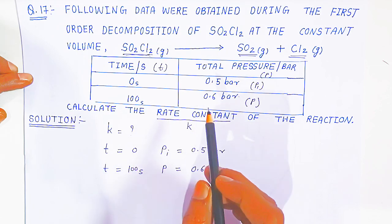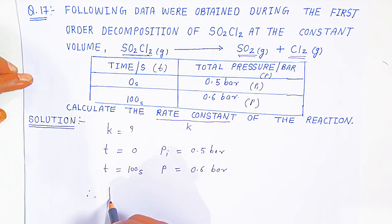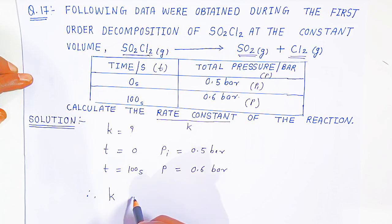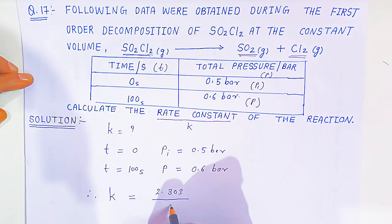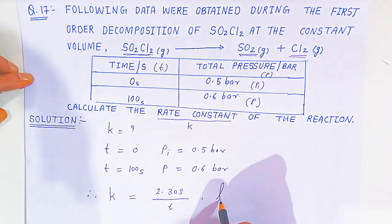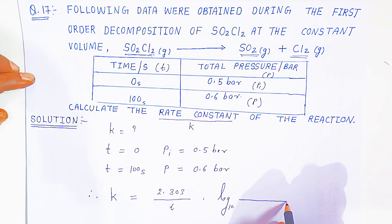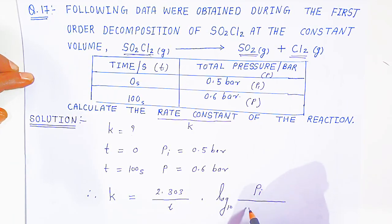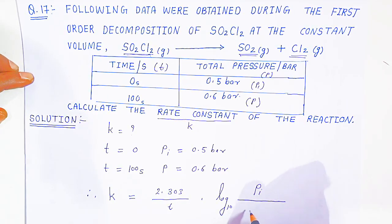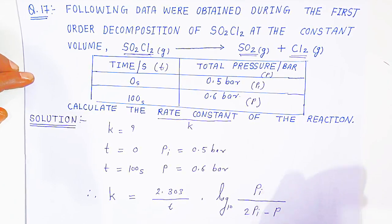We are going to use the formula for finding the rate constant. You should know this formula: rate constant k = 2.303 / t × log₁₀ of the ratio of initial pressure to the difference of twice the initial pressure and the pressure after 100 seconds.